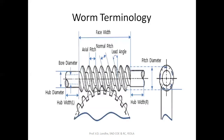This is the terminology diagram for the worm gear. If you see here, this is the face width, this is the bore diameter, this is the axial pitch, and this is the lead angle. We will further see their particular definitions.